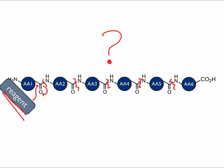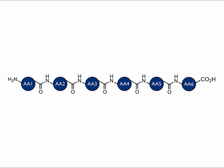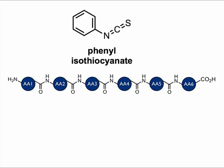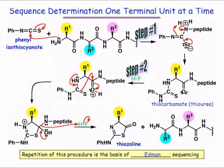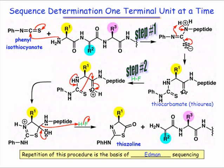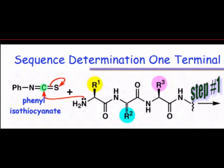For the sequencing method known as the Edmond degradation, the compound phenylisothiocyanate serves this role. The central carbon atom, much like the central carbon of carbon dioxide, is a good electrophile and can be attacked by the amino nitrogen atom.